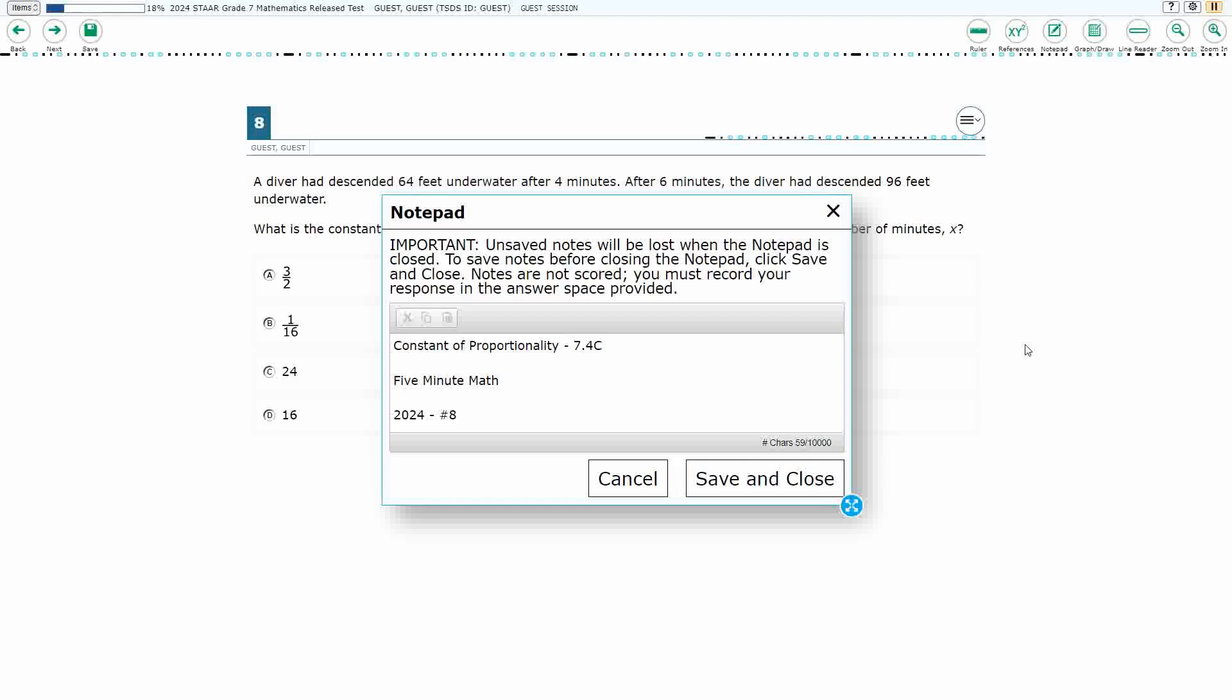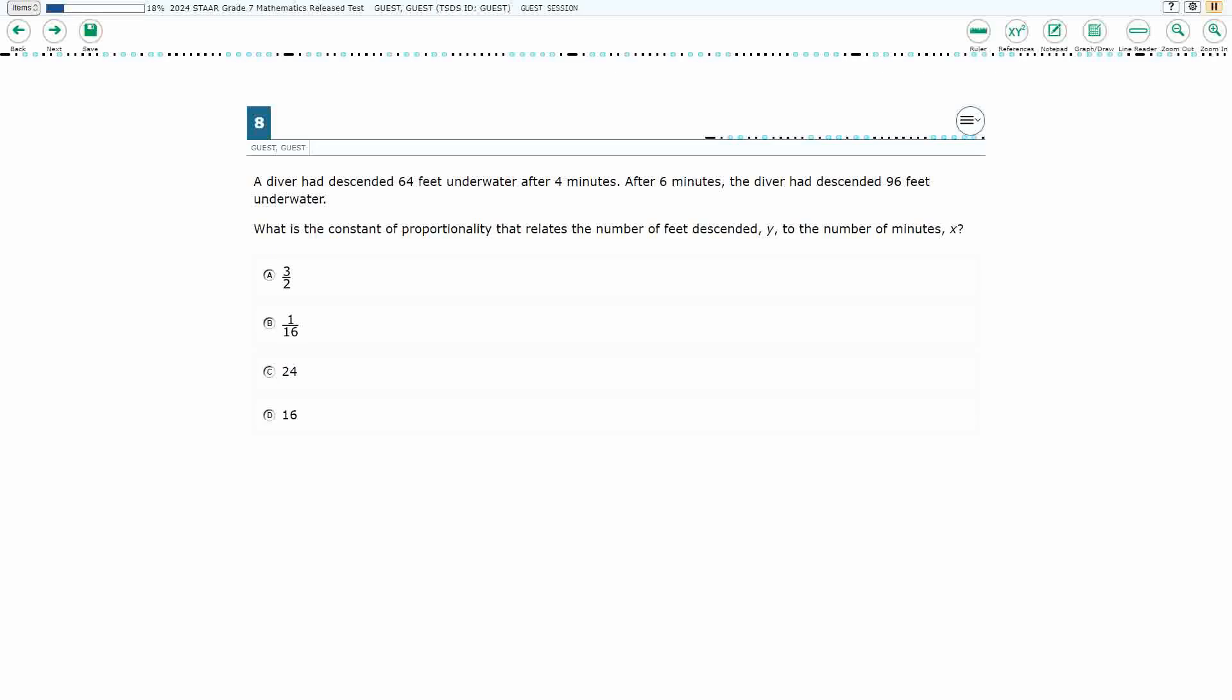Hello, and welcome to 5-Minute Math. Today we are looking at the 7th grade concept of Constant of Proportionality. This is Standard 7.4c in the great state of Texas, and we are using item number 8 of the 2024 released STAAR test.